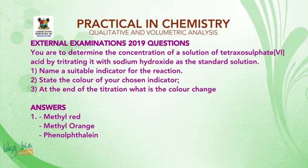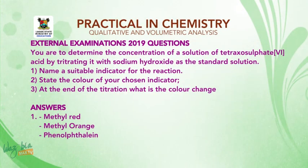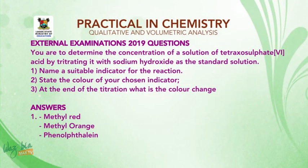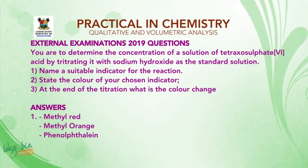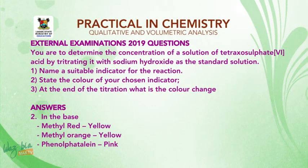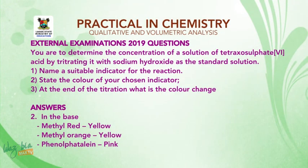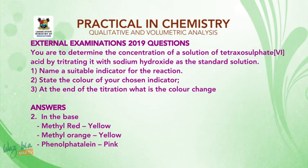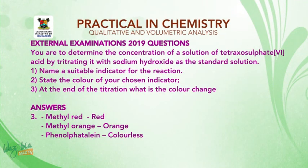The answers are as follows: to name a suitable indicator — methyl red, methyl orange, and phenolphthalein are all suitable indicators that could be used. To state the color of your chosen indicator: methyl red is yellow, methyl orange is equally yellow, and phenolphthalein is pink in the medium when you add it to your solution. For the color at the end of the titration: methyl red is red, methyl orange is orange, and phenolphthalein is colorless.